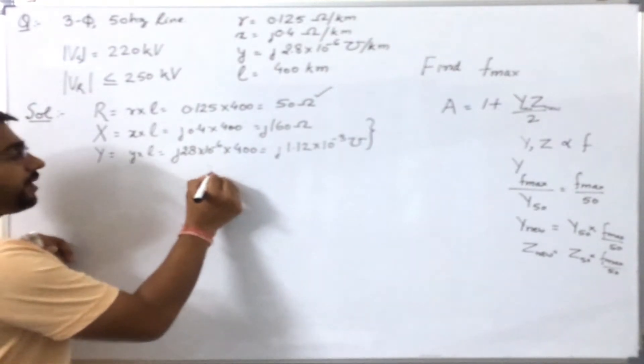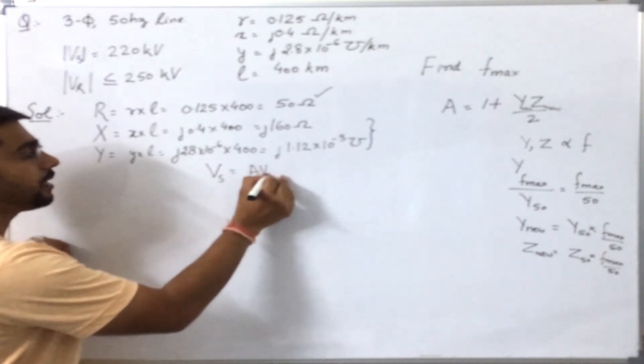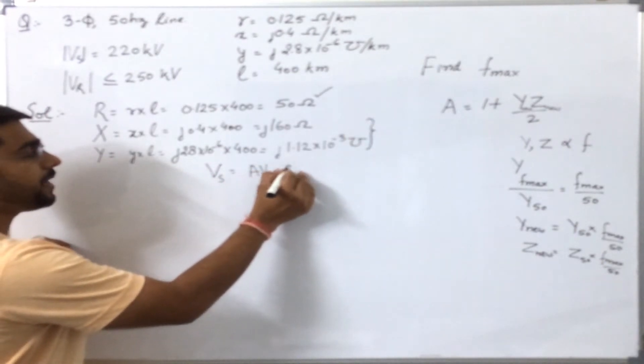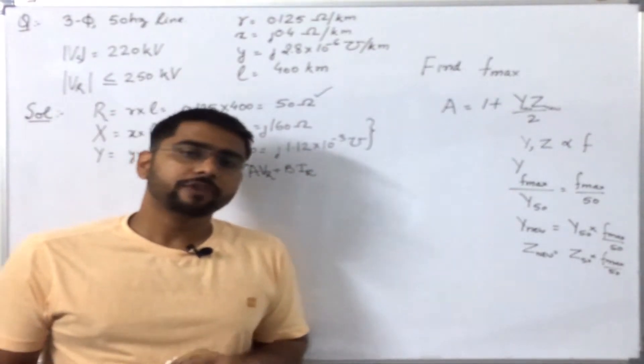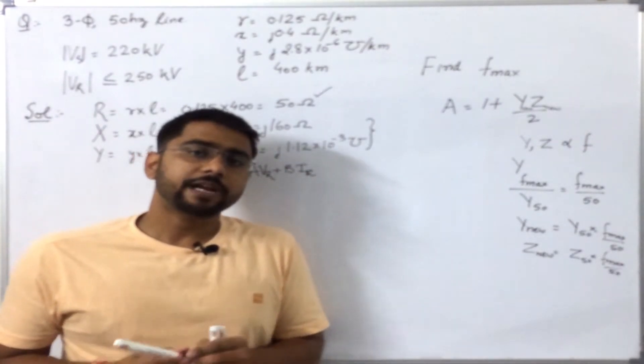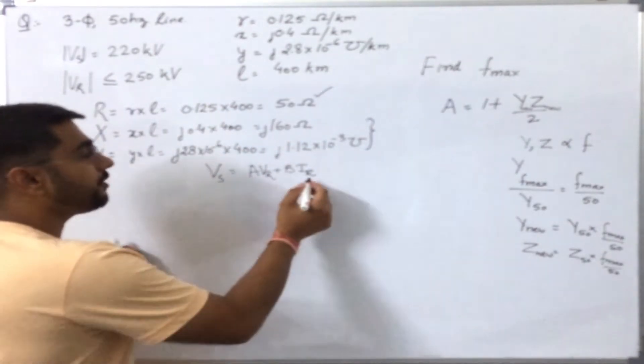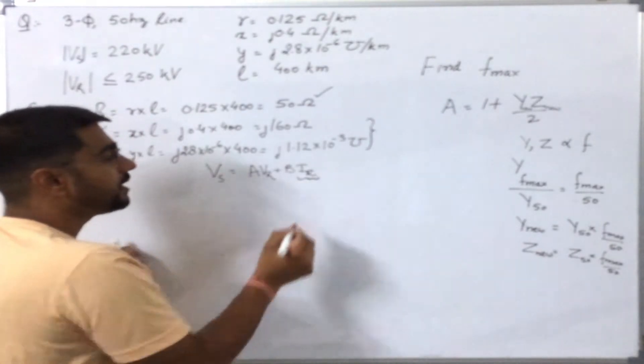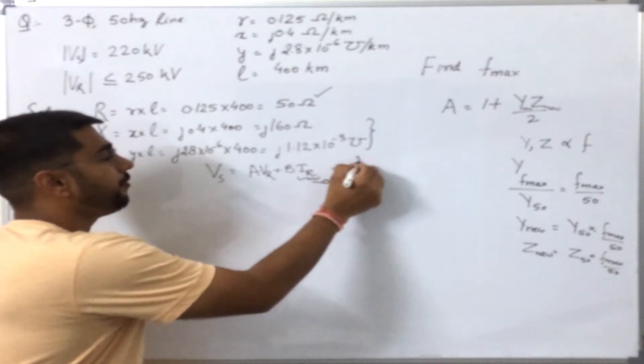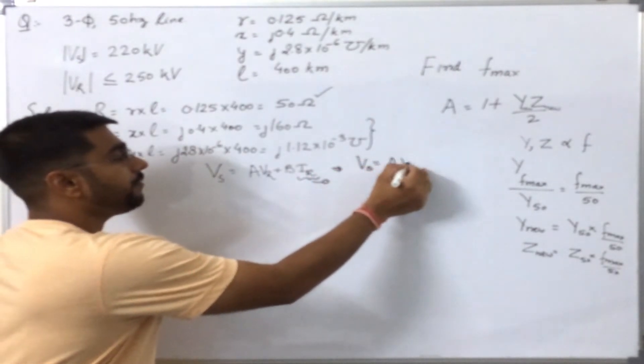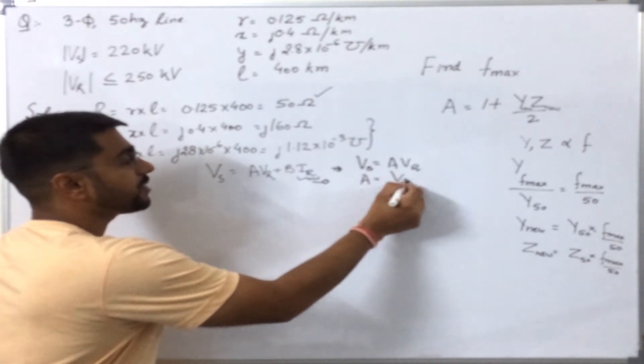Now, what is the value of A? We know that Vs, the sending end voltage, can be written as A times Vr plus B times Ir. Now, we know that the worst case scenario will be when the Ferranti effect is highest. When will it be highest? It will be highest when there is no load, that is, the receiving end current equals zero.